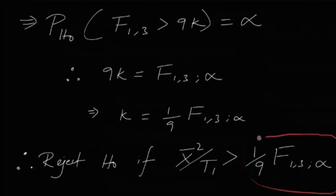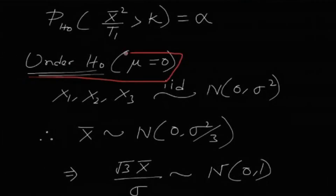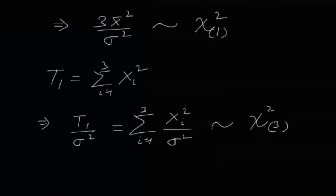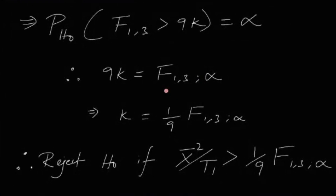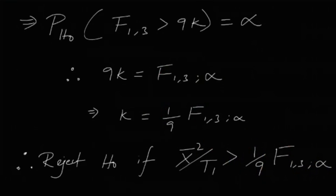This is the critical region. Under H0, we found the distributions of x̄² and t1, combined them into an F(1,3) statistic, identified the α cutoff point, and obtained K = (1/9)·F_{1,3,α}. So, reject H0 if x̄²/t1 > (1/9)·F_{1,3,α}. That's the solution to this problem. See you next time.